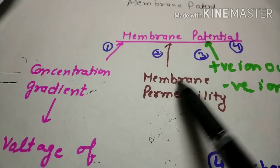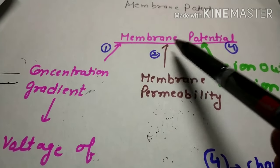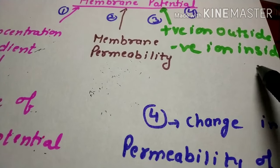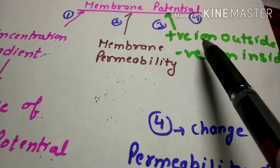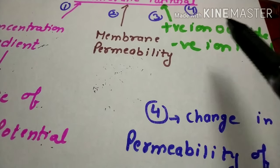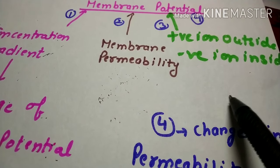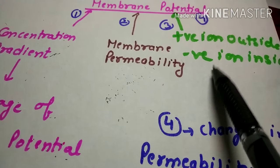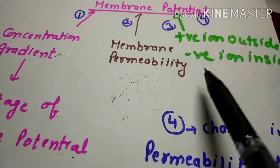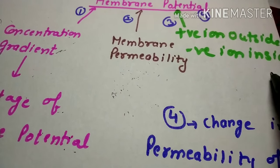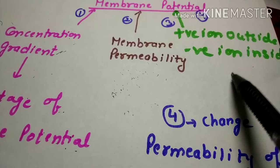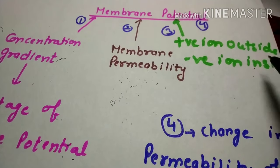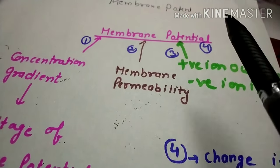Membrane permeability plays a very important role in determining membrane potential. Third, more positive charges are present outside and negative charges are inside. In nerve fibers, sodium ions are present outside, which is why positive charges accumulate on the outer surface of the membrane. Potassium ions are present inside, bringing negative charges. Not only potassium ions — the proteins and organic phosphates present inside the membrane also carry negative charges. These proteins and organic phosphates cannot cross the membrane because the membrane is not permeable to them, so they also contribute to the negativity inside the membrane.